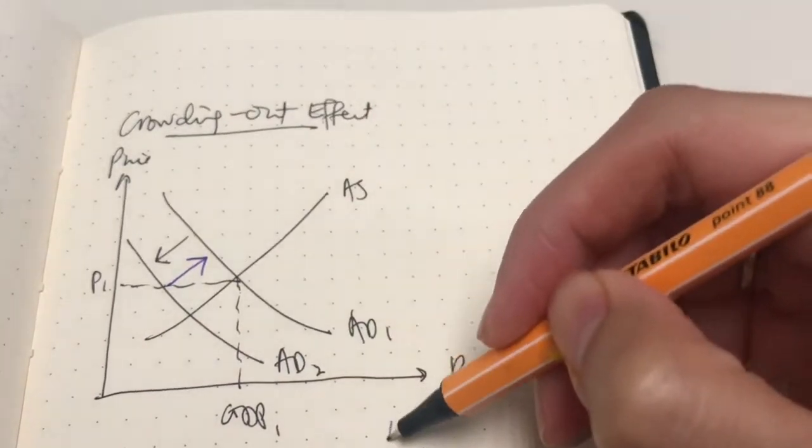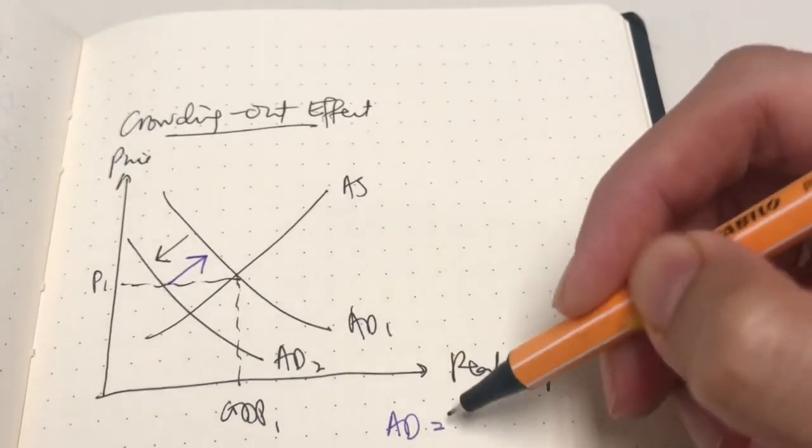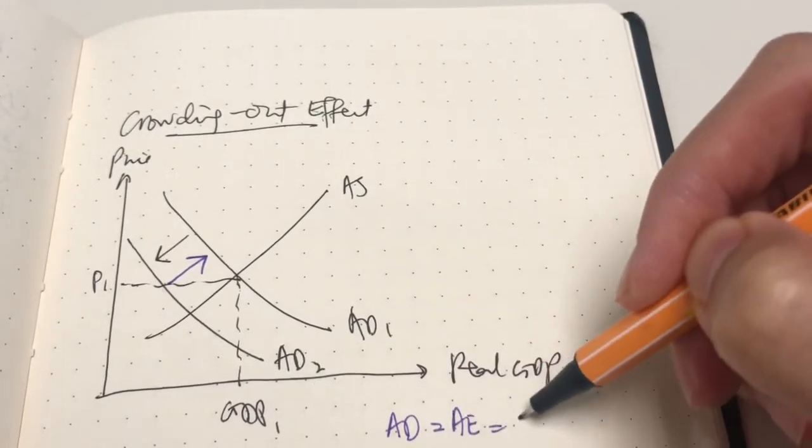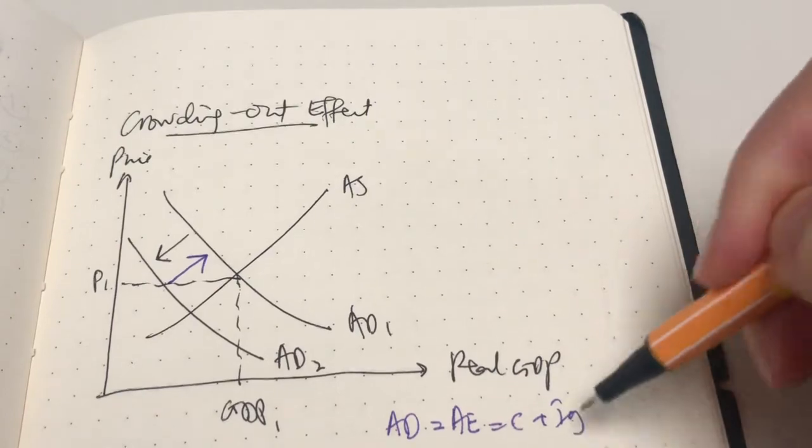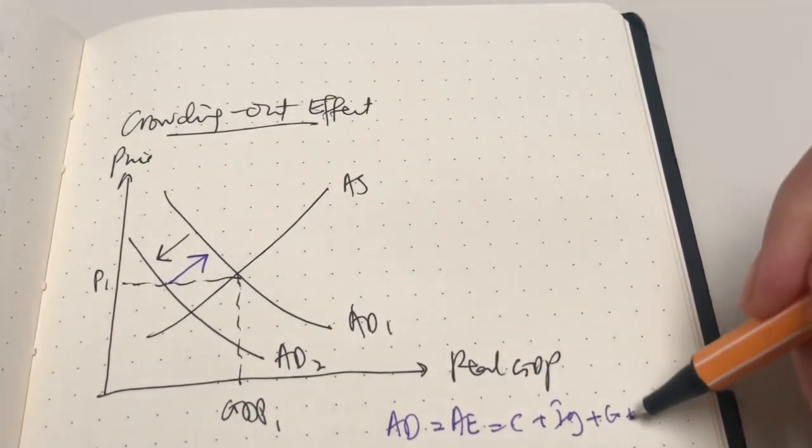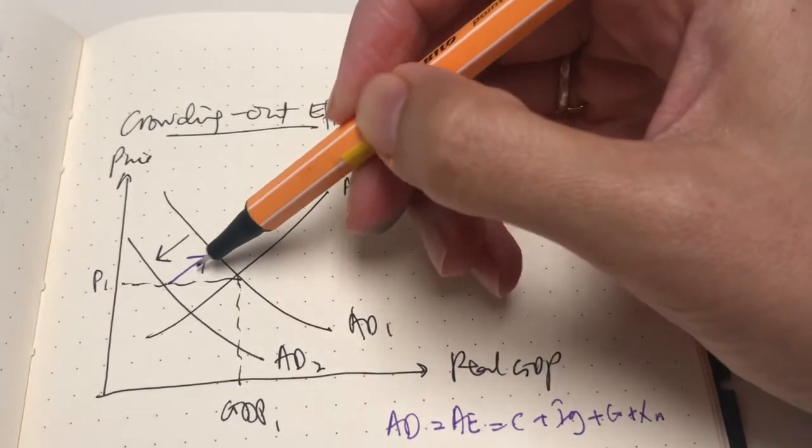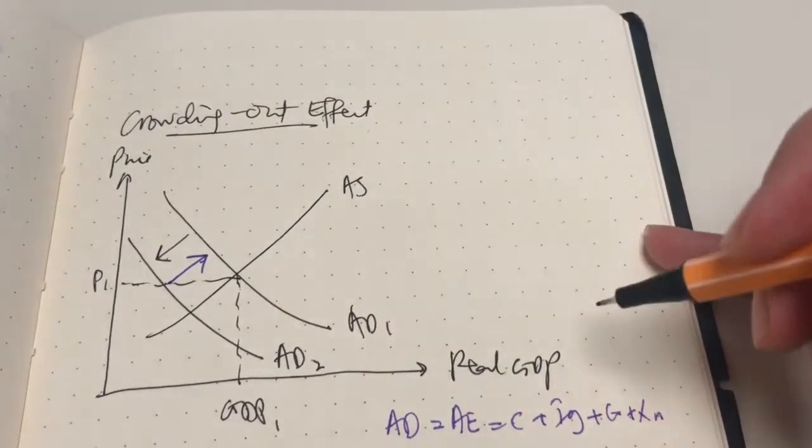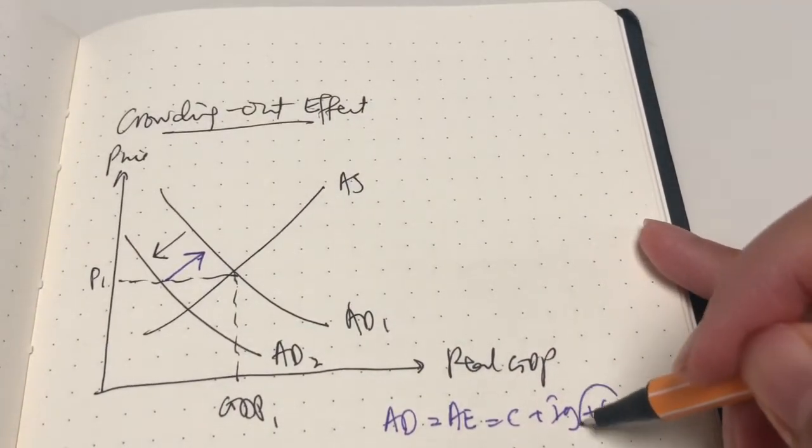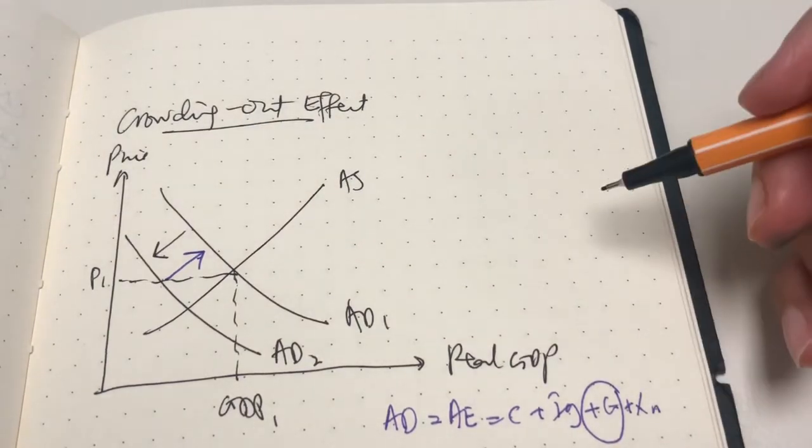A component of AD is the aggregate expenditure, right? Which is C, IG, G, and XN. The government may opt to increase government spending. Increasing government spending here, that is a fiscal policy—expansionary fiscal policy.